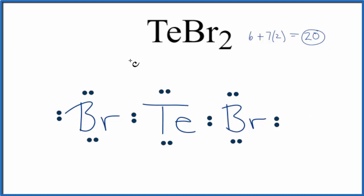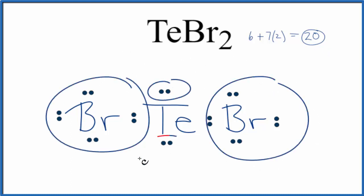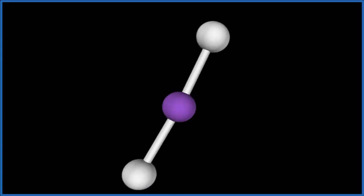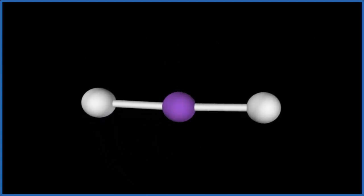If we wanted to look at the molecular geometry, we have two atoms here and then two lone pairs. Let's see what that gives us. We'll consider the purple atom to be the Te. We're going to add two bromine atoms. One, two. You can see they spread out to be as far away from each other as they can.